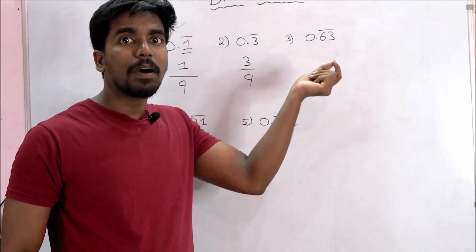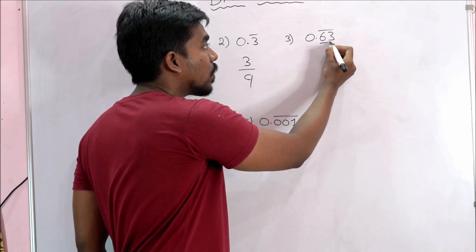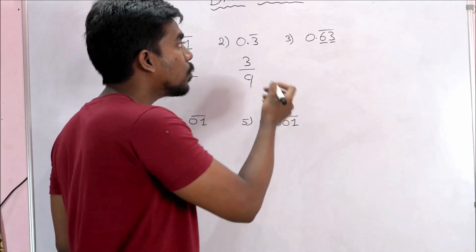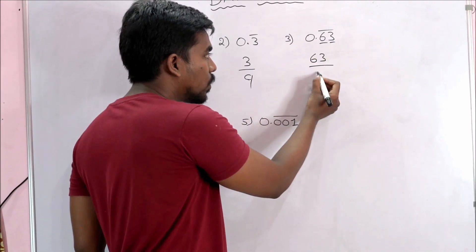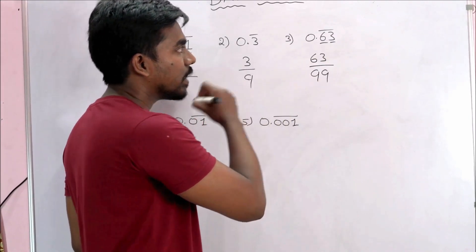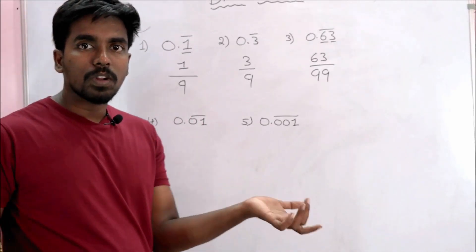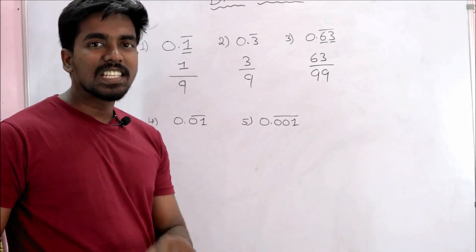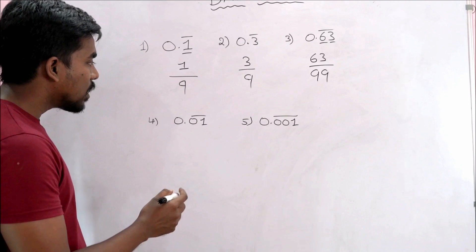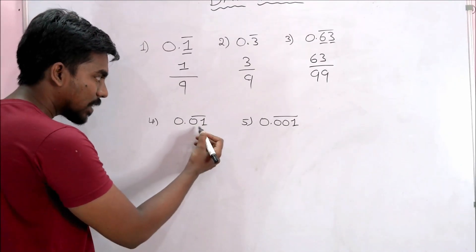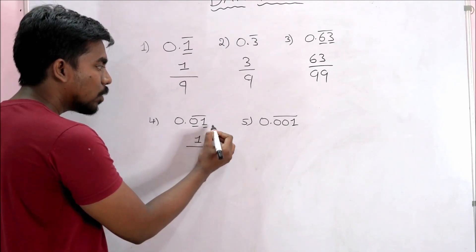One way: 0.63 bar — any numbers with two digits. So two digit numbers give a denominator with two digits.